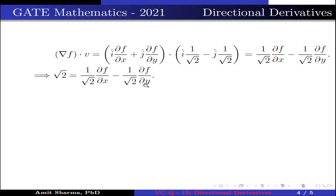This equals √2, because the directional derivative of f in the direction of unit vector v at (0,0) is √2. Multiplying both sides by √2, we get: ∂f/∂x - ∂f/∂y = 2. This is equation two.